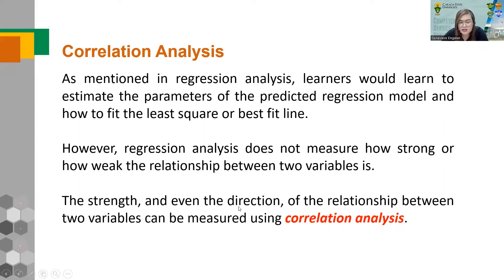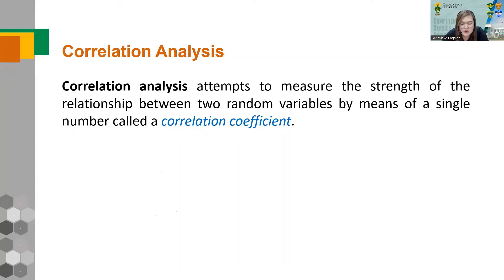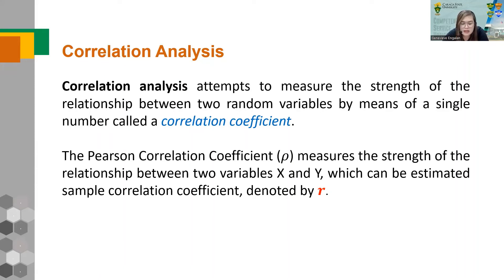In regression, we can tell the direction of the relationship from the sign of B — if B is positive, the relationship is positive, meaning as x increases, y also increases. However, regression does not measure the strength of the relationship between the two variables. That is where correlation analysis comes in — it measures both the strength and direction of the relationship between two variables.